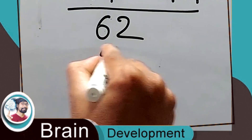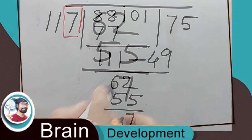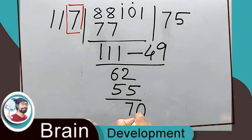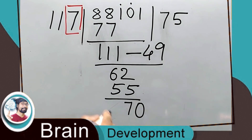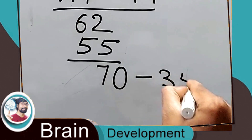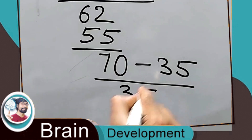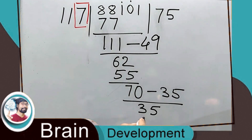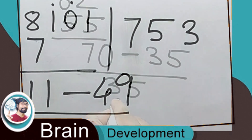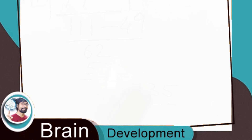Now 62 has to be divided by 11. Five times 11 is 55, so 7 remains. The zero comes down, making 70. Seven has to be multiplied with this 5 — five sevens are 35 — so 70 minus 35 is 35. Now 35 has to be divided by 11 — eleven threes are 33 — leaving only 2.